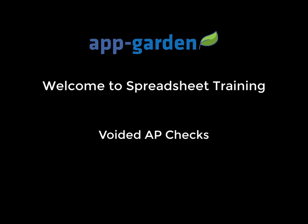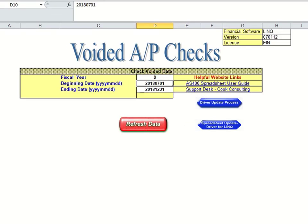This training session is going to be on our voided AP check spreadsheet. When you open your spreadsheet you will be on the settings tab.